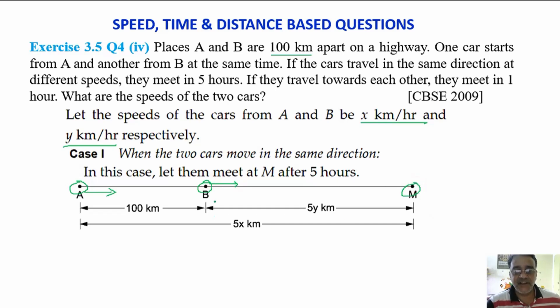Definitely B's speed will be less than A. Here we will use the formula for distance equals speed into time. So what is the speed of car starting at A? X km per hour. And what is the time? 5.